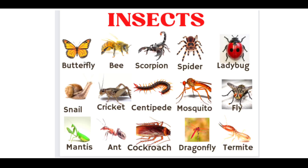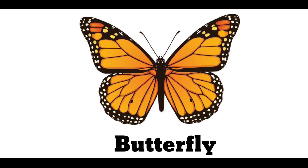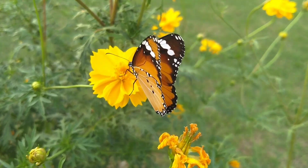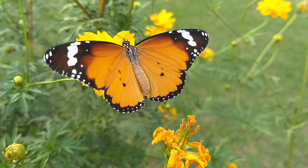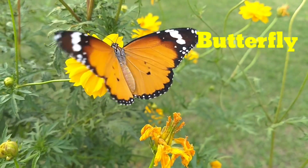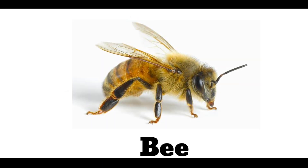Hello friends, welcome to my channel. Today we are learning different types of insect names in English and Hindi with pictures and sound. This is a butterfly. This is a bee.